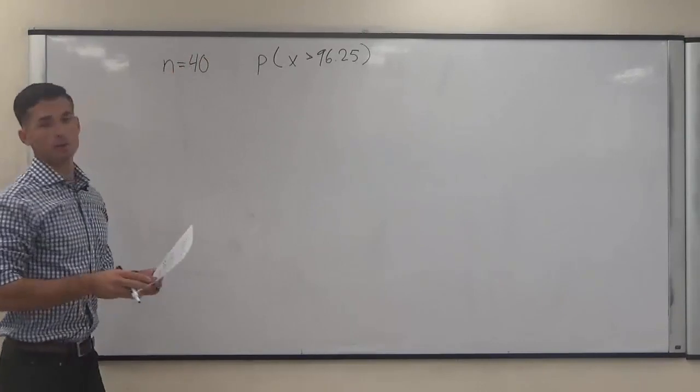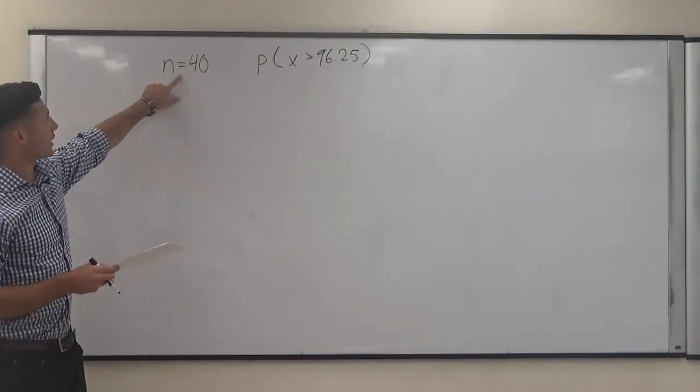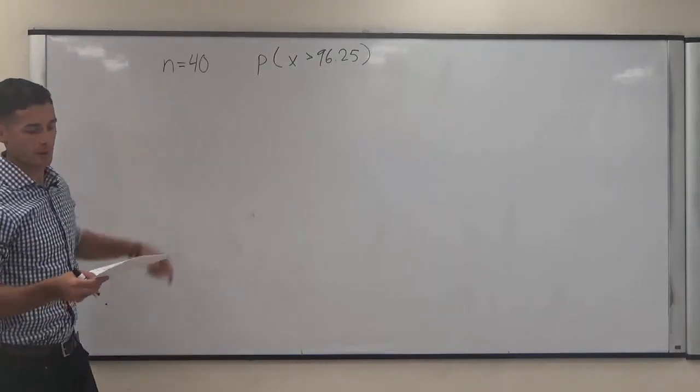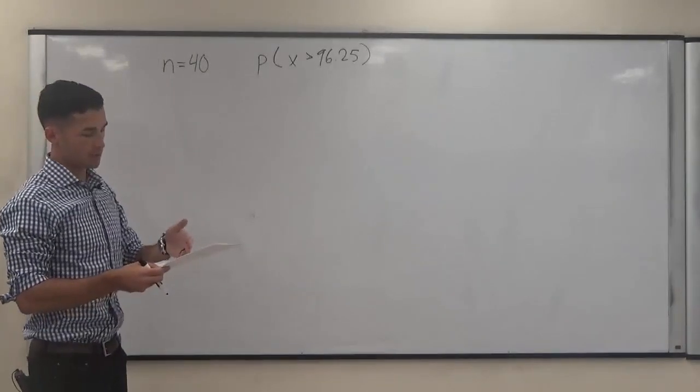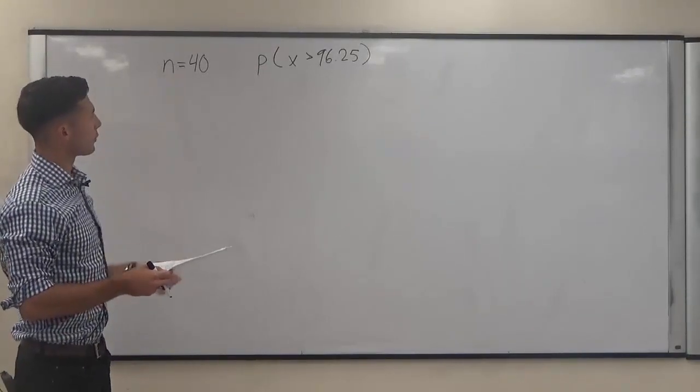However, if the problem was not normal distribution, this n, this sample size, would have to be greater than or equal to 30 for us to complete the problem. However, we don't have to worry about that here. As it says normal distribution, and our n is 40, greater than 30.